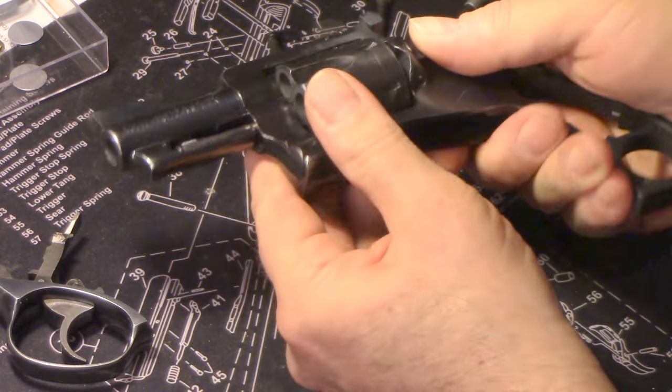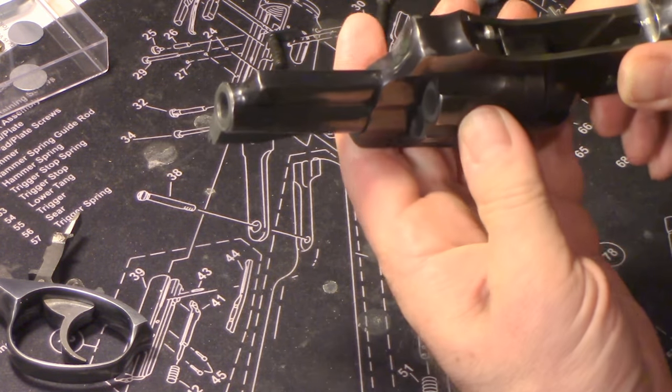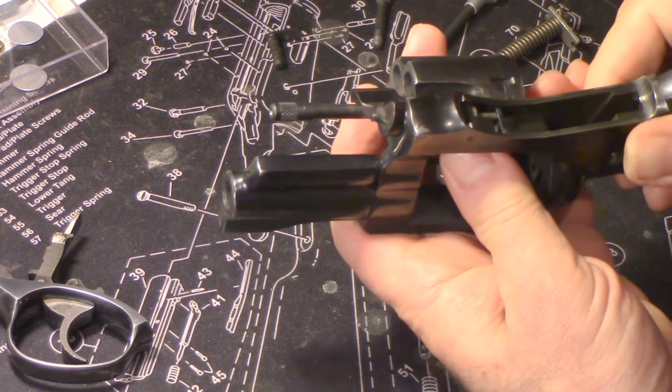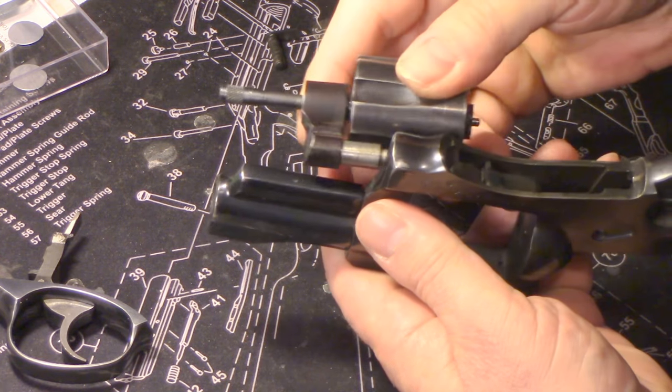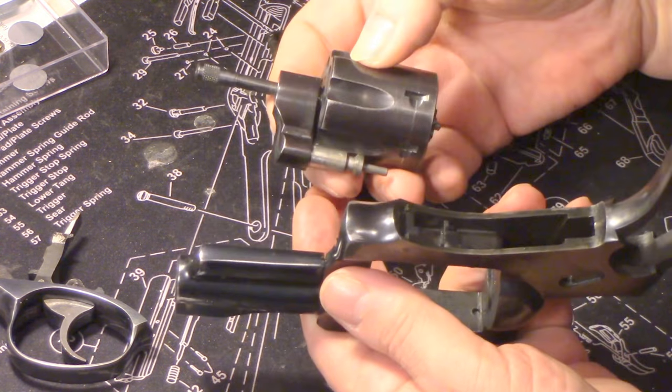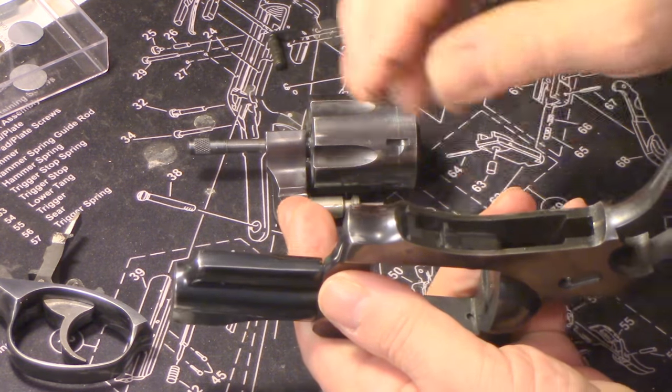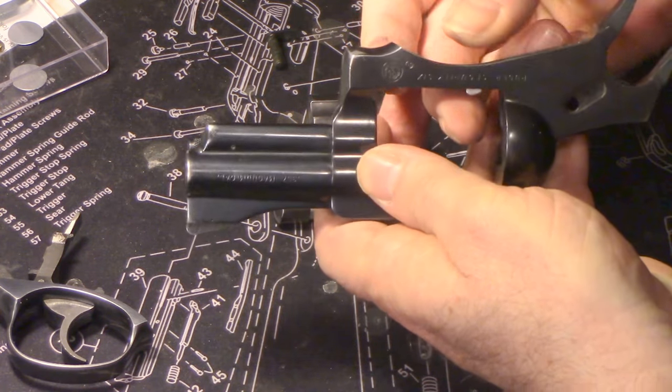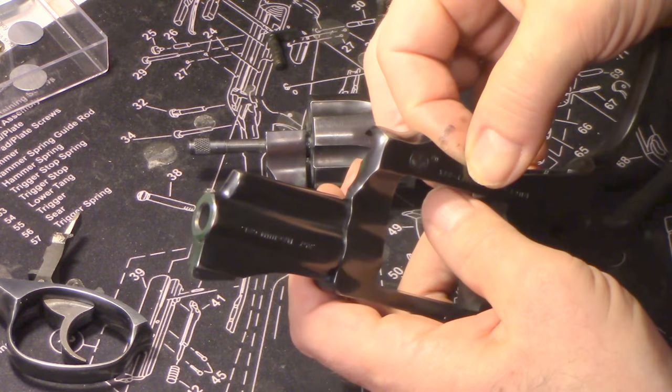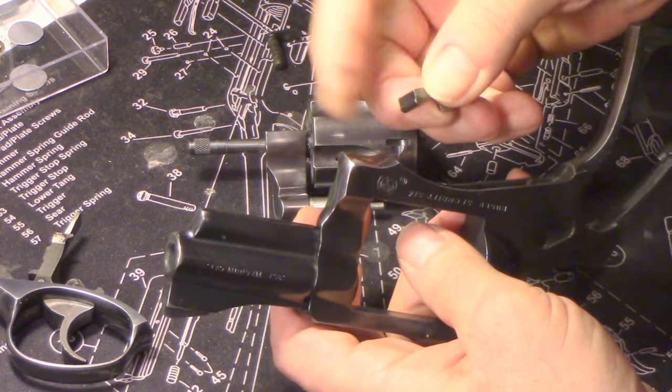So with the trigger assembly out, you can take the cylinder out, and I'm holding the gun upside down, because when you do that, there's a little piece that will fall out. So first of all, see that, and take the little piece out that is loosely sitting in there.